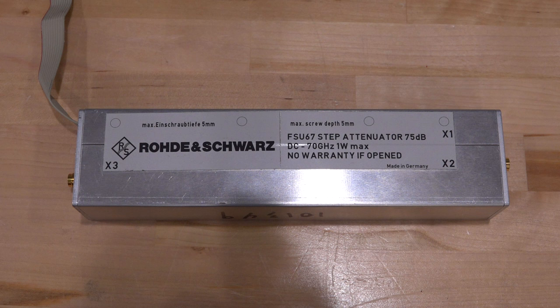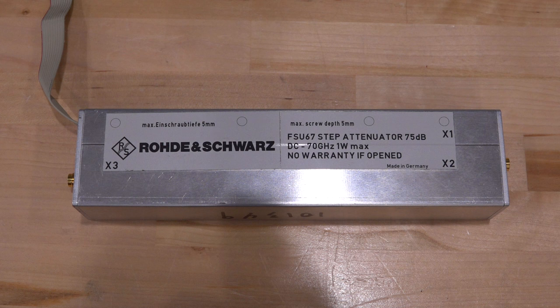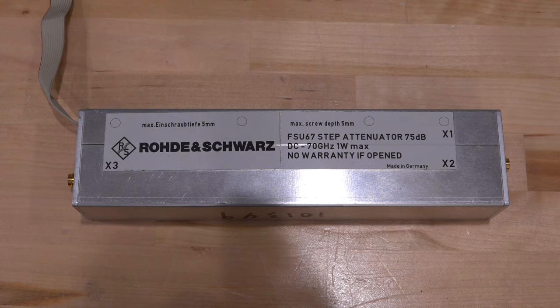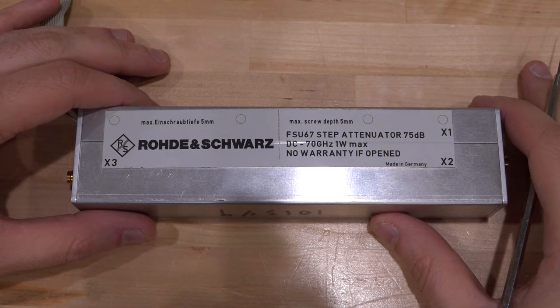There are not that many companies that can make electromechanical attenuators like this up to these frequencies. Keysight, of course, makes them up to 110 GHz because it goes into the front end of their spectrum analyzers and oscilloscopes. And I think Rohde & Schwarz makes them at least up to 90 GHz or so. A while back, Rohde & Schwarz used to buy the electromechanical attenuators from Anritsu. Whenever we opened one of their older spectrum analyzers, we saw that.